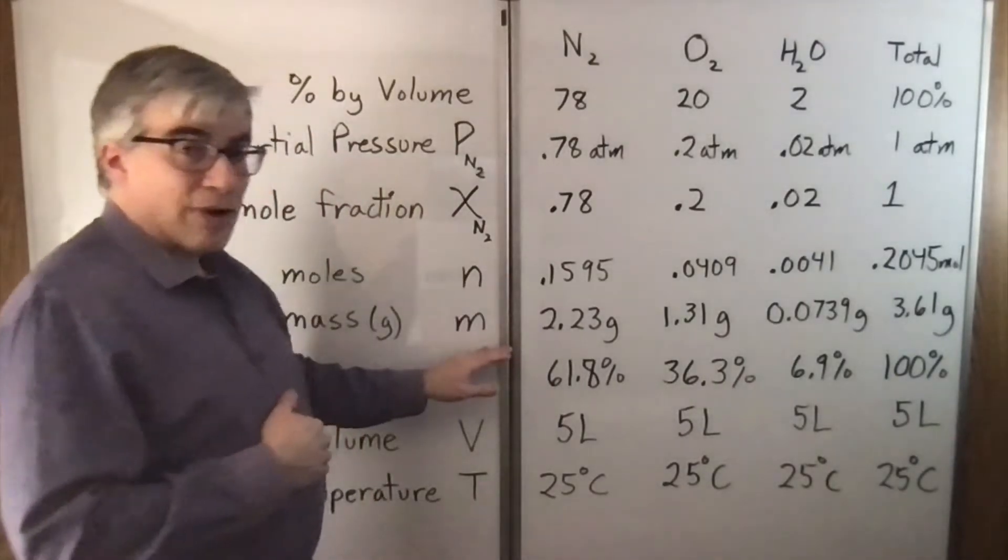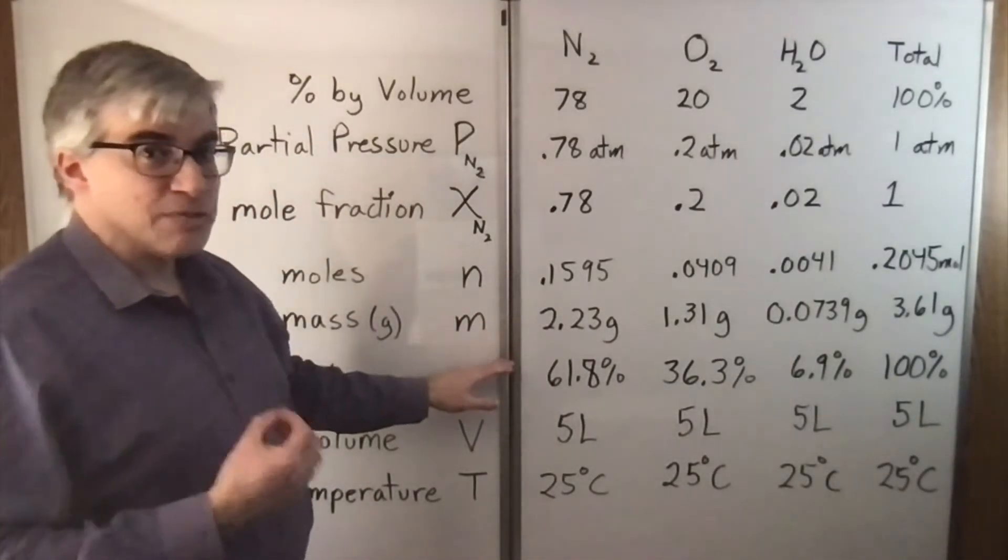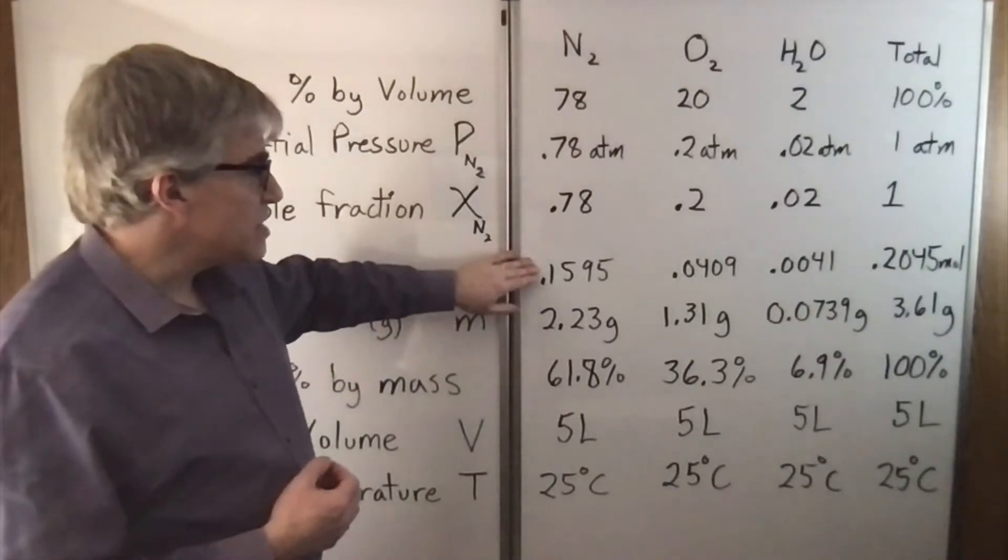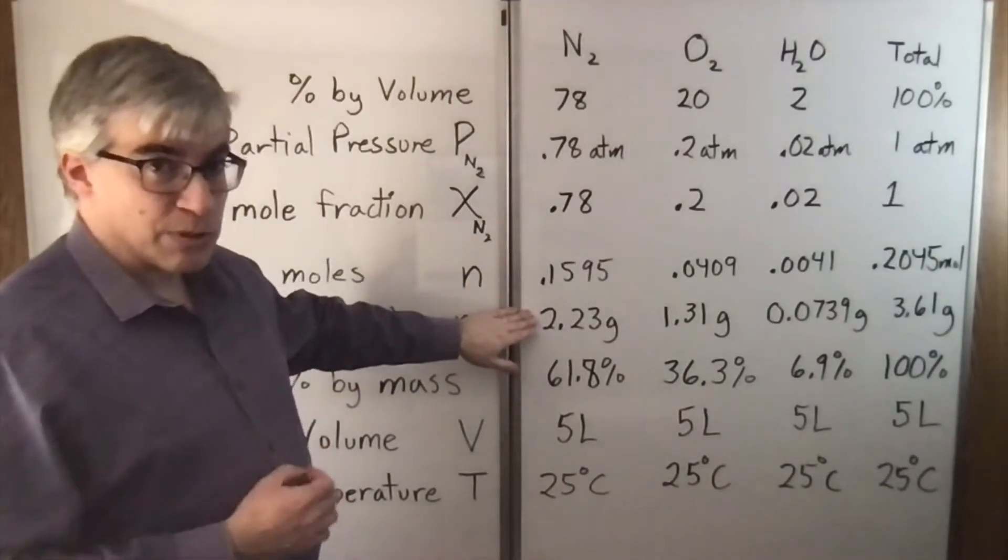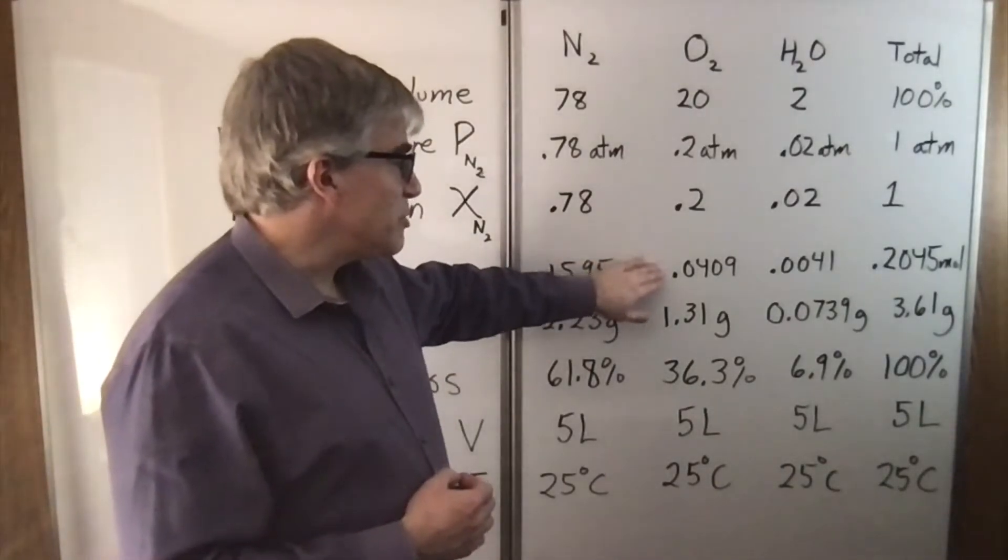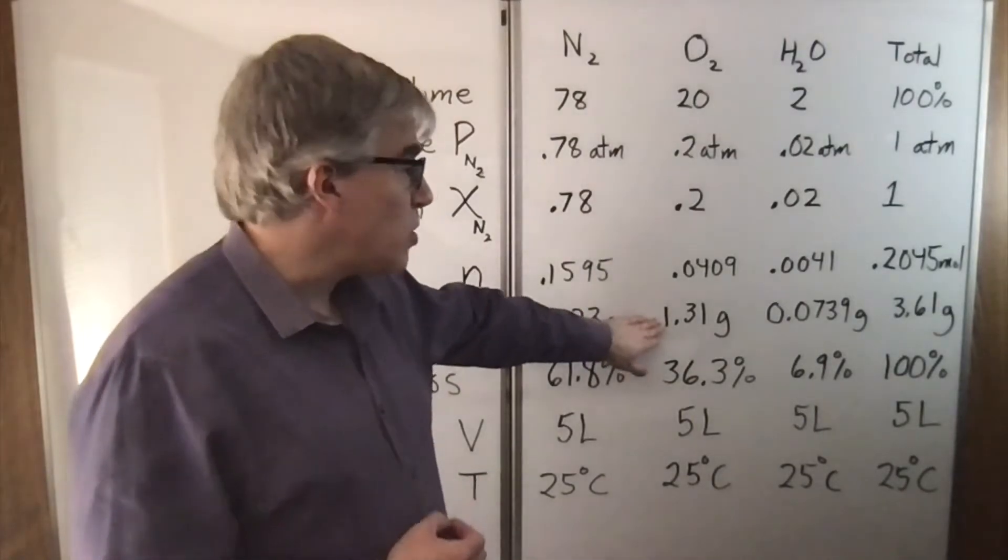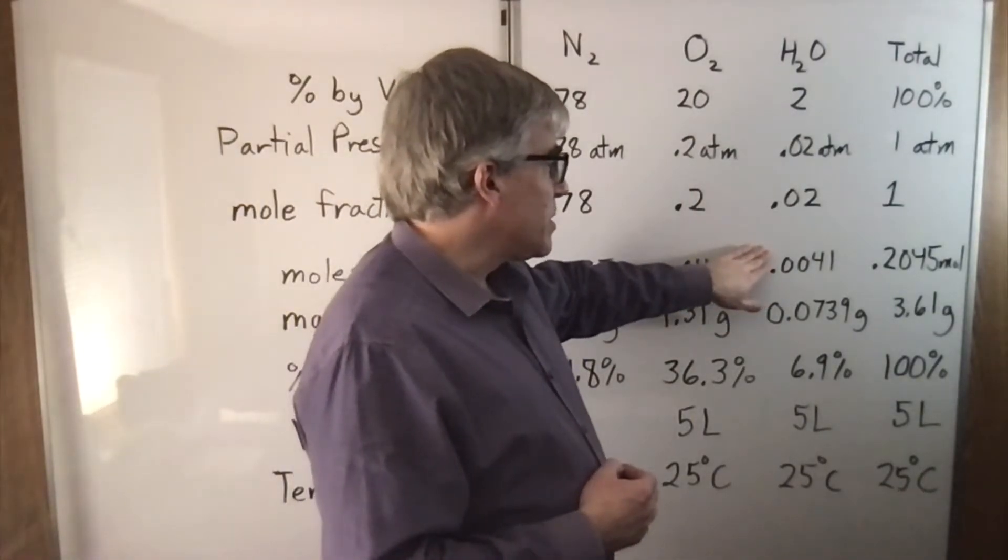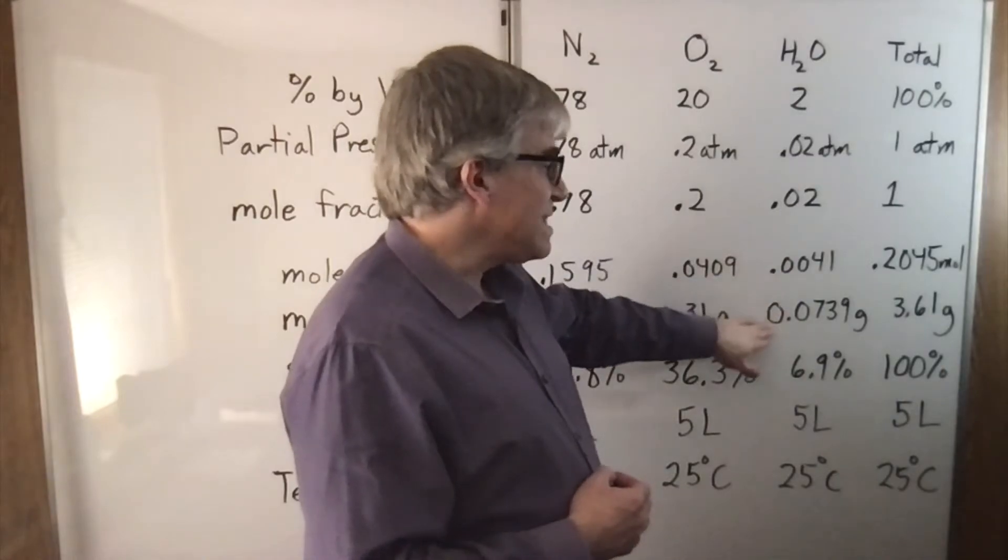In order to convert to grams, each of these has to be treated differently because this has to get multiplied by 28 grams per mole. Oxygen has to be multiplied by 32 grams per mole, and moles of water vapor have to get multiplied by 18 grams per mole.